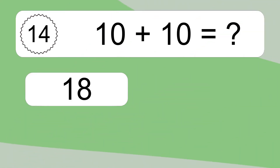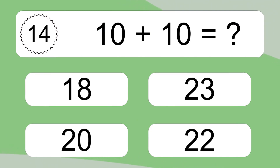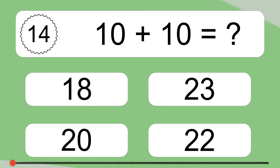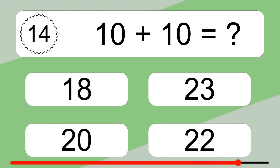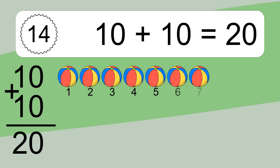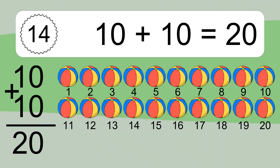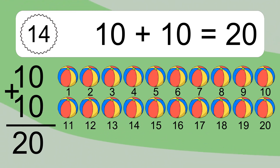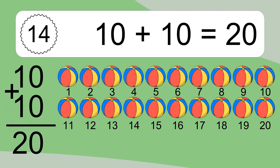10 plus 10 equals what? 10 plus 10 equals 20. Let's count it: 1, 2, 3, 4, 5, 6, 7, 8, 9, 10, 11, 12, 13, 14, 15, 16, 17, 18, 19, 20.